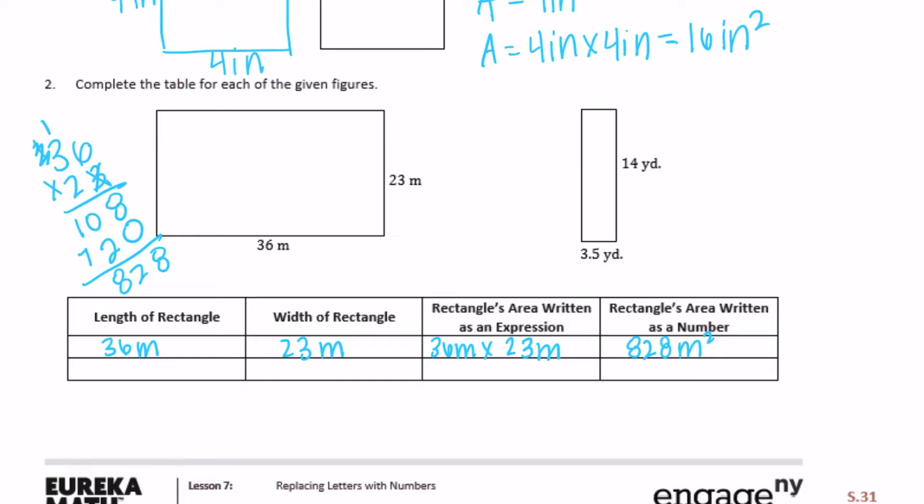And then the second one. The length is three and five-tenths yards, the width is fourteen yards. So let's do three and five-tenths times fourteen.